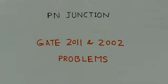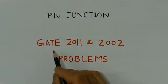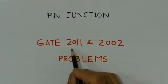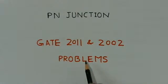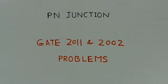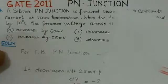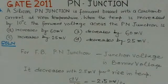The present video considers two GATE problems in the area of P-N junctions — one from 2011 and the other from 2002. Since they are related problems, they have been taken together here. Both problems are based on the forward biased P-N junction.